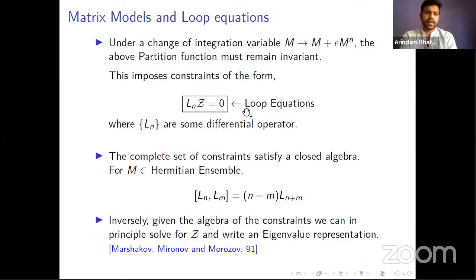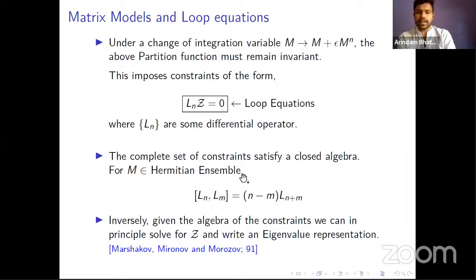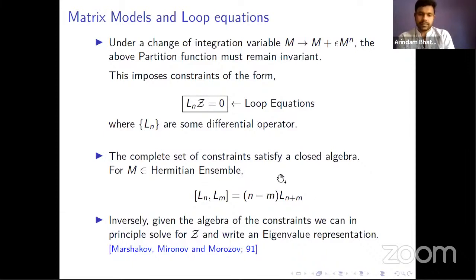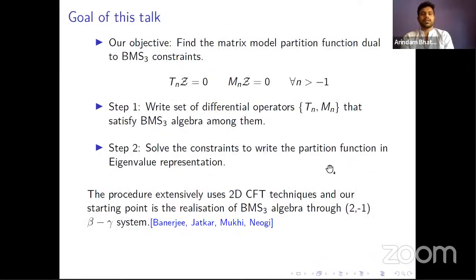For conformal matrix models this complete set of constraints satisfies a closed algebra. For example, if you take the ensemble to be a Hermitian ensemble, the differential operators satisfy a Virasoro algebra — or rather a Witt algebra because there's no central extension. Inversely, one can ask: given the algebra satisfied by the constraints, can we work out the partition function? The answer is yes. This was worked out in the 90s by various groups who started with a known algebra and computed the corresponding partition function.